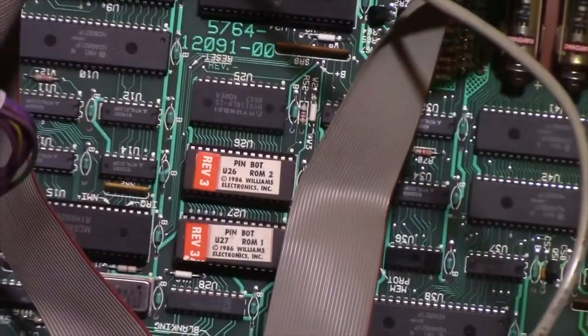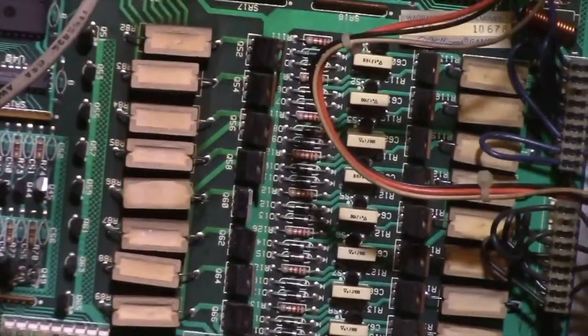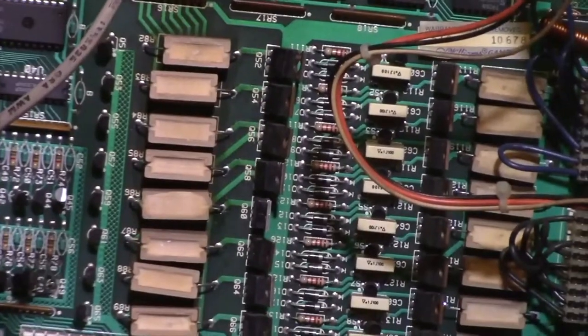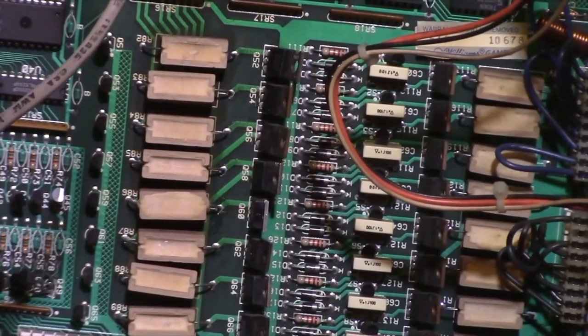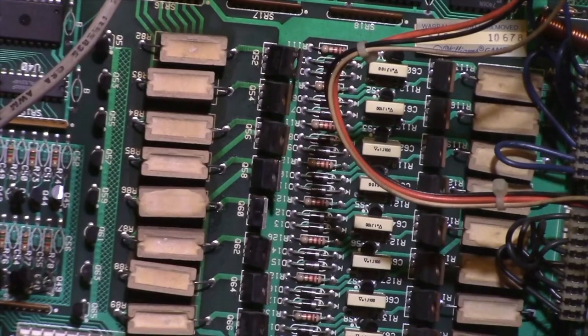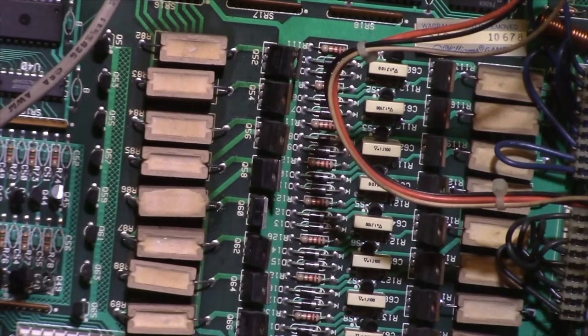And there's the ROMs, of course. And I believe this down here might have had something to do with the matrix, the light matrix. I know I replaced a couple of transistors in that area. I don't remember exactly now. But there were some issues with this machine, of course, when it arrived.